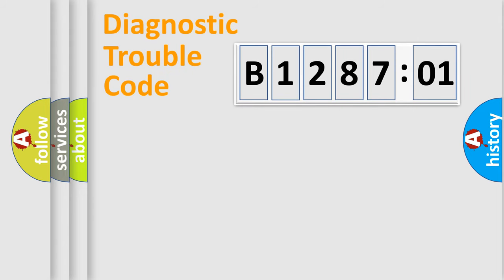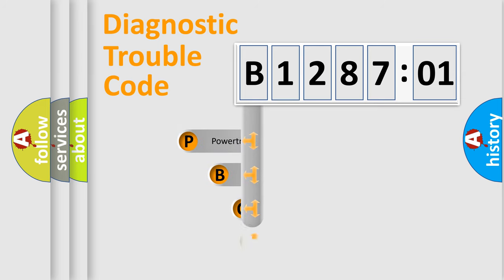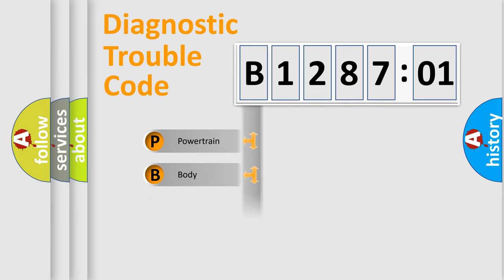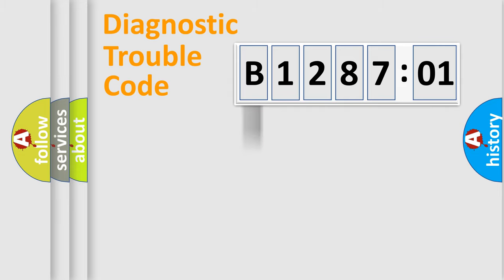Let's do this. First, let's look at the history of diagnostic fault code composition according to the OBD2 protocol, which is unified for all automakers since 2000. We divide the electric system of an automobile into four basic units: Powertrain, Body, Chassis, and Network.